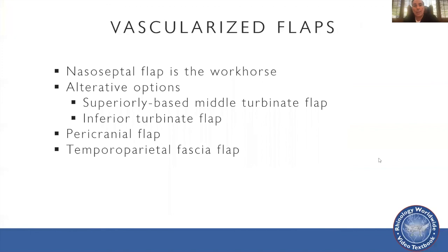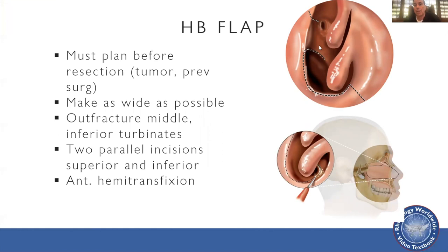In terms of vascularized flaps, the nasal septal flap is the workhorse. Middle turbinate and inferior turbinate flaps are not very good for large defects. If there is a large defect and the flaps aren't available because of previous surgery or radiation, pericranial and temporal parietal fascial flaps are excellent choices, and in some cases free flaps can be used. The septal flap has to be prepared at the beginning of the case. The incisions come from the sphenoid ostium superiorly and through the choana — the choanal cut limits rotation, and if you need more rotation you can extend that cut down further.